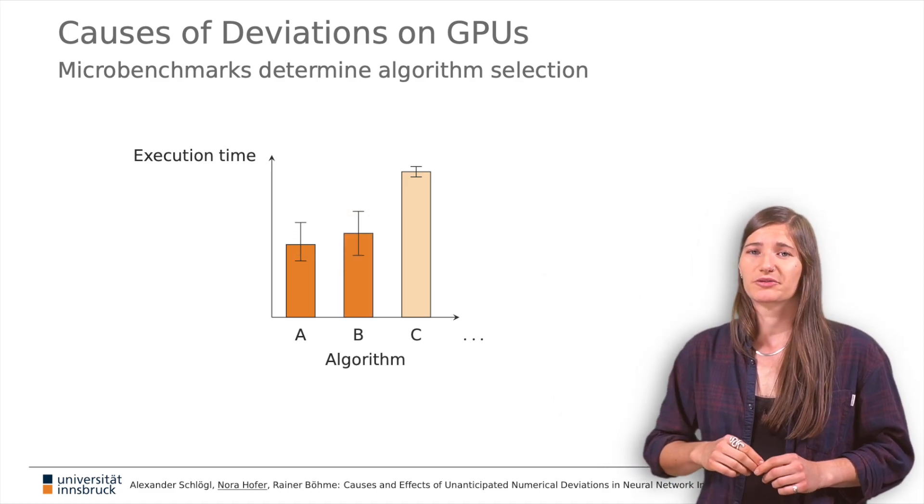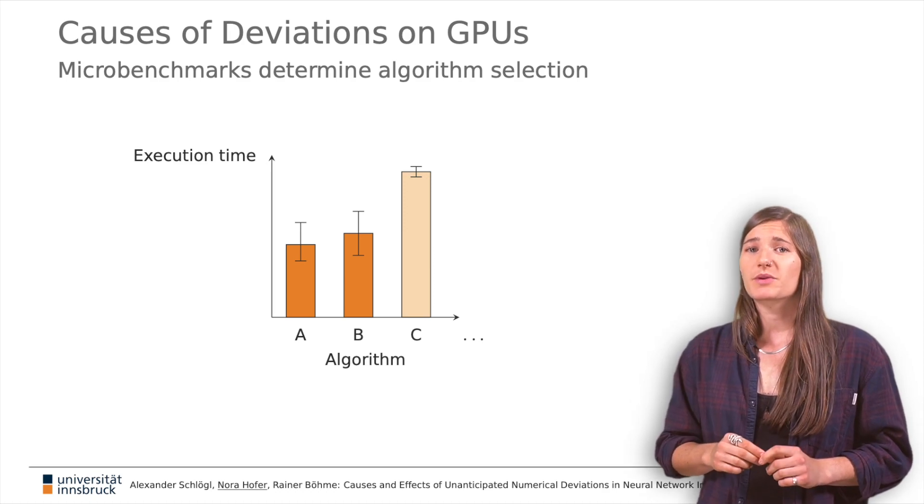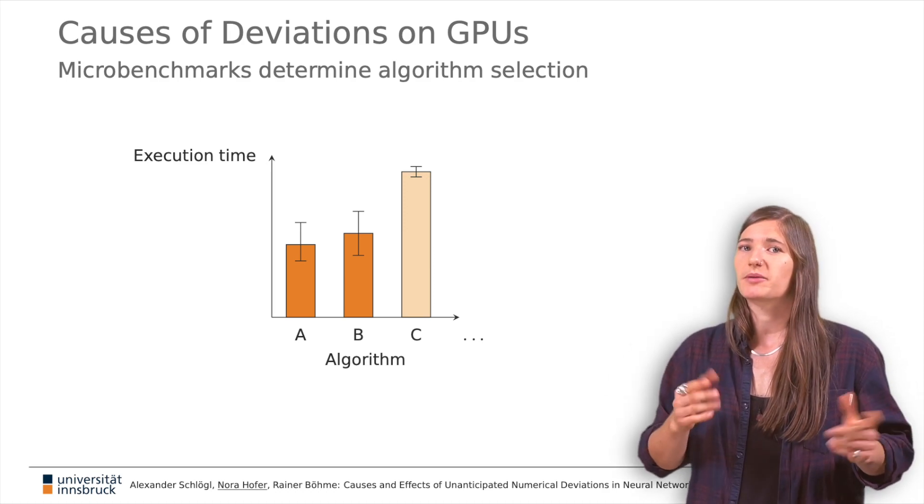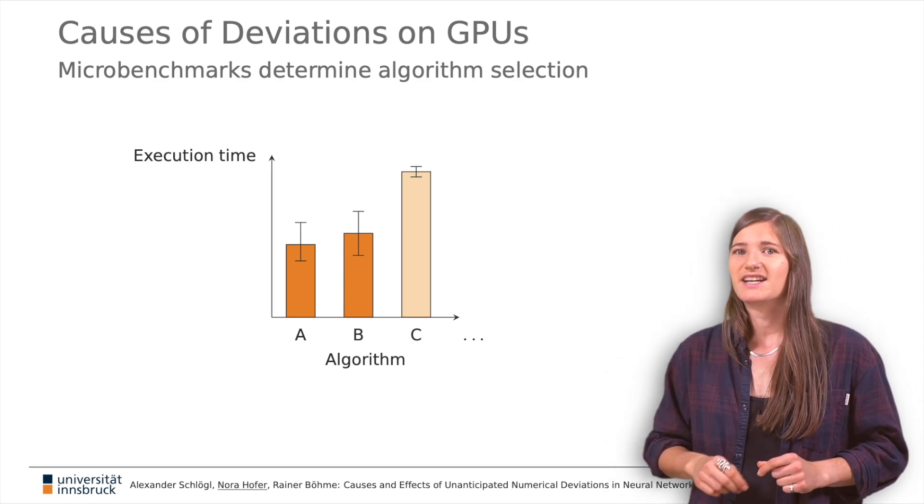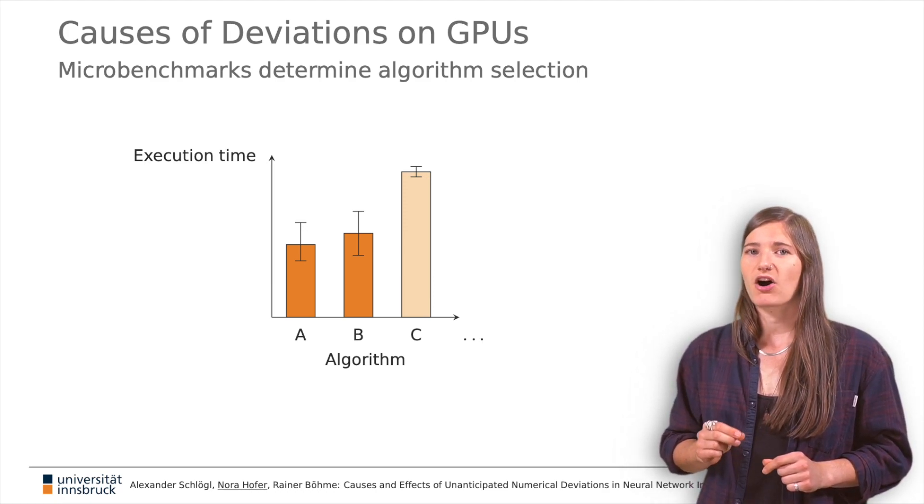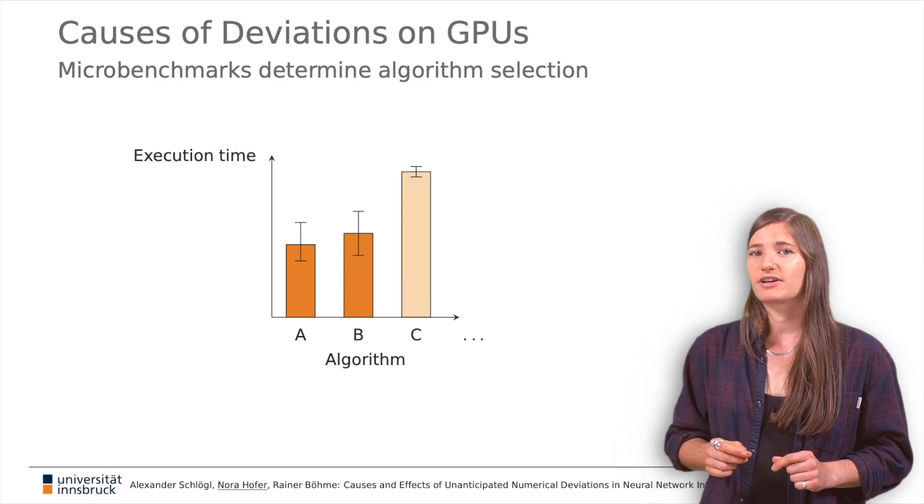If two or more leading algorithms are very close, which one is going to win the race may depend on random factors. As a result, the sequence of algorithms chosen to evaluate all layers of a neural network may differ between sessions.